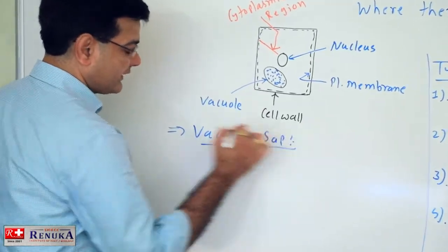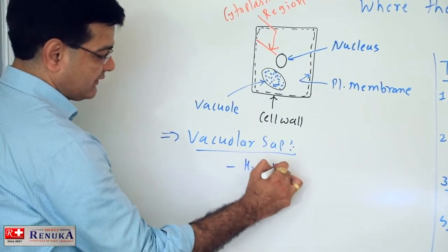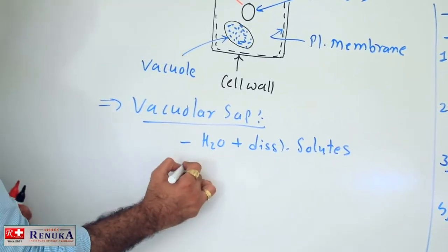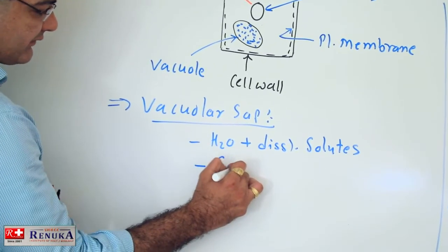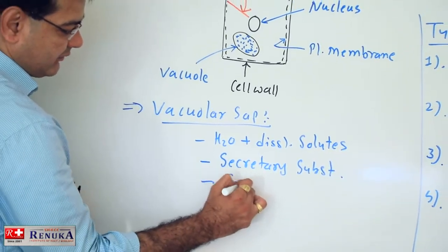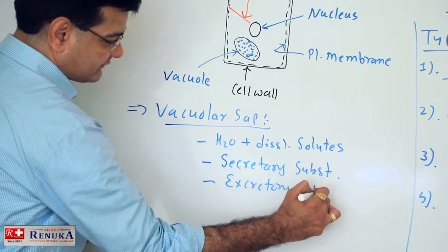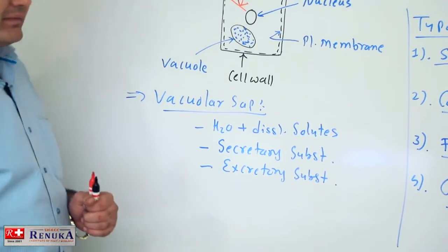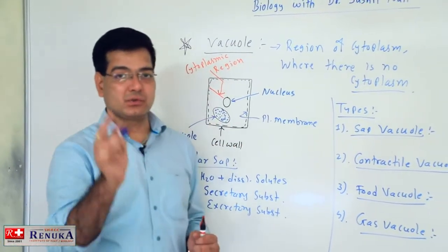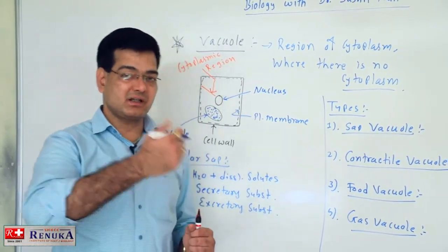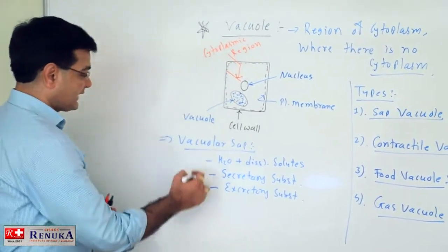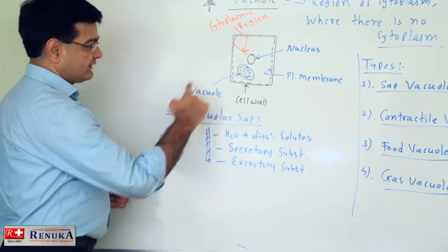Vacuolar sap is a fluid which may be formed of water and dissolved solutes inside it. In many cases, vacuole is formed of secretory substances as well. Some excretory substances may also be present in the vacuolar sap. Remember that anything which enters into the cell needs to be stored in the vacuole, or anything which comes outside from the cell is generally in the form of vacuole. So vacuolar sap is the fluid present inside the vacuole.